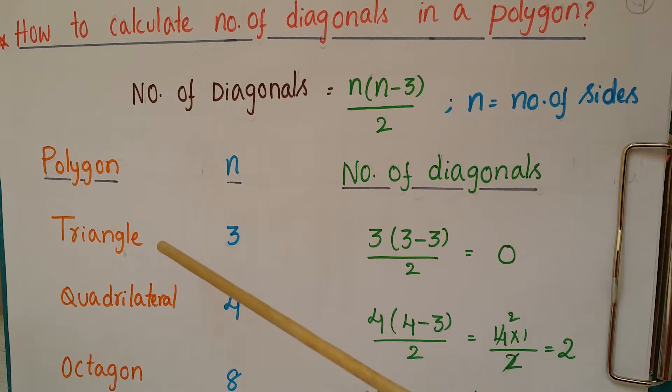Suppose we take a triangle. The number of sides of a triangle is 3, so the number of diagonals is 3(3-3)/2. We can apply this n value in the formula, and we get 0. So the triangle has 0 diagonals.